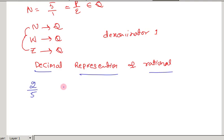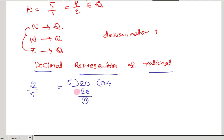To write 2 by 5 in decimal form, we divide the numerator by the denominator. Since 2 is smaller than 5, we take 20. We can subtract 5 four times from 20, giving 5 fours are 20, remainder 0. So the decimal representation of 2 by 5 is 0.4.